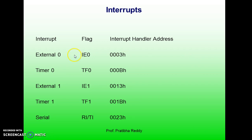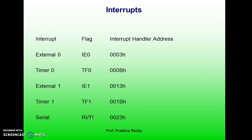There are totally six interrupts associated with the 8051 microcontroller: two external interrupts, two timer interrupts, and two serial communication interrupts — a receive interrupt and a transmit interrupt. In reality, only five interrupts are available. Let us now discuss clearly about the interrupts and their interrupt handler addresses.